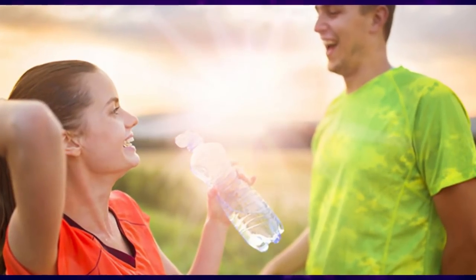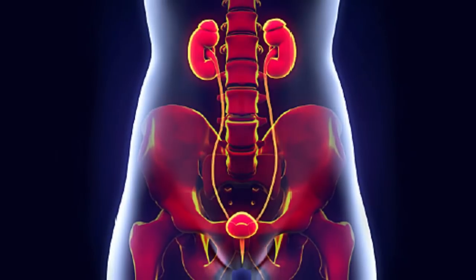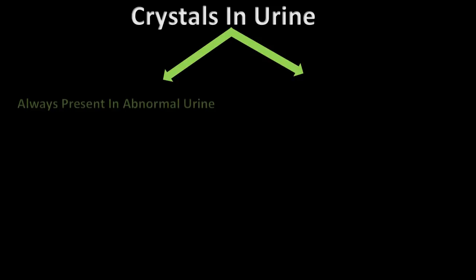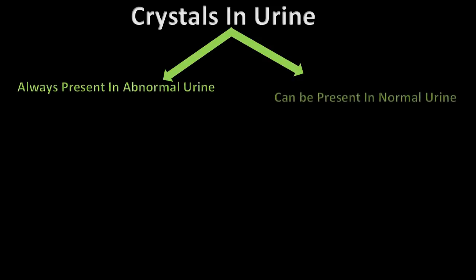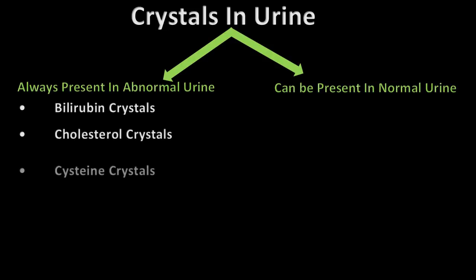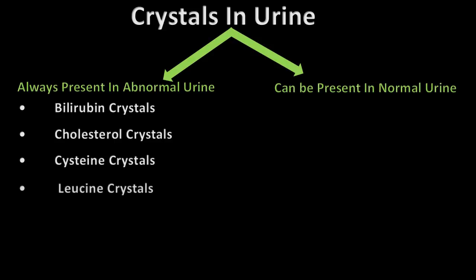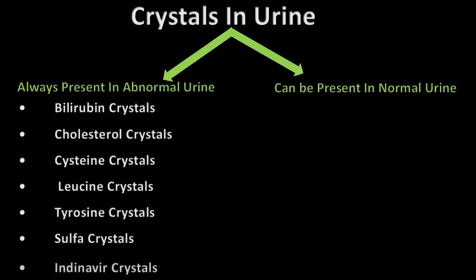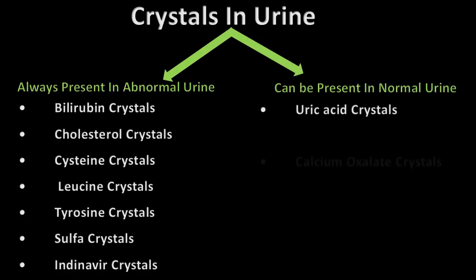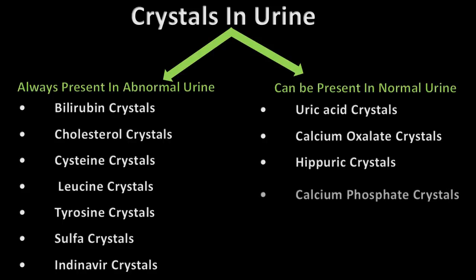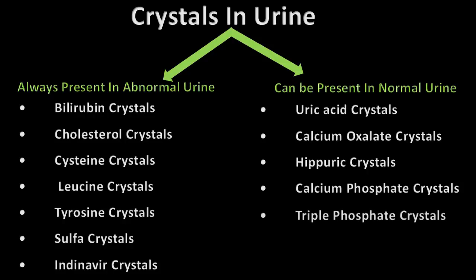Sometimes crystals are found in healthy people and other times they are indicators of organ dysfunction or an infection in the urinary tract. Crystals can be divided as those always present in abnormal urine and those that can be present in normal urine. Examples of abnormal crystals are bilirubin, cholesterol, cysteine, leucine, tyrosine, sulfa, and indinavir crystals.